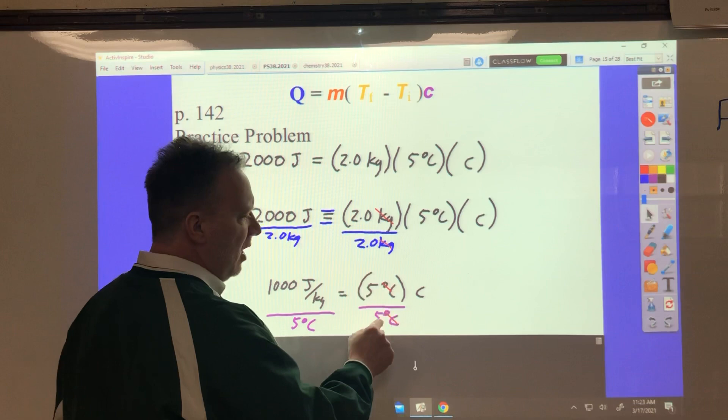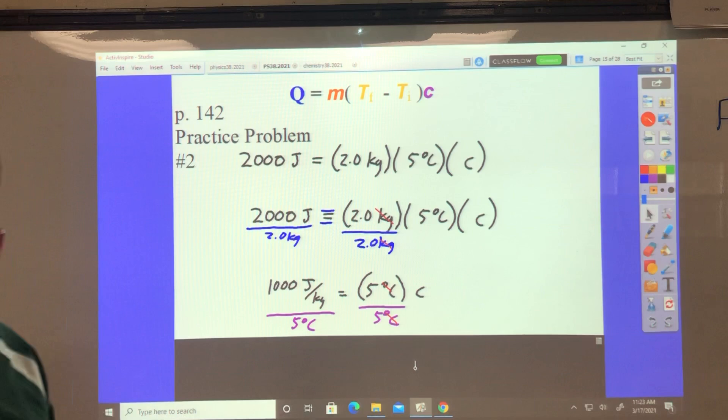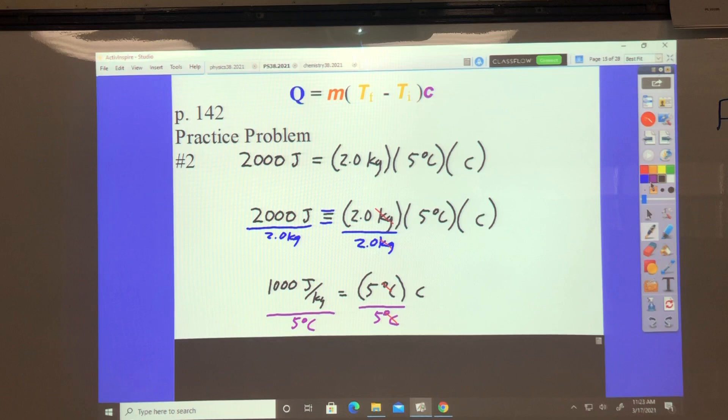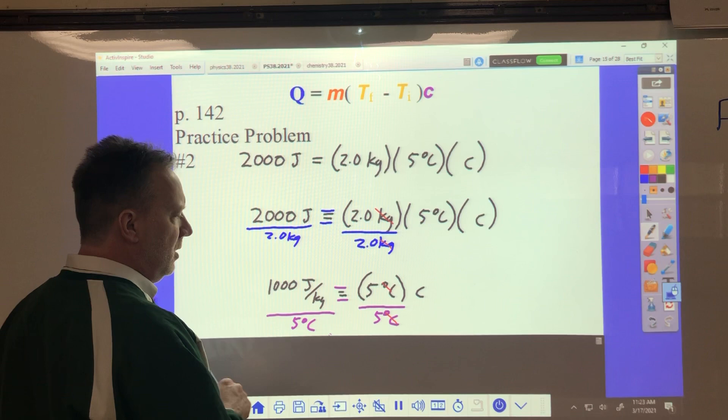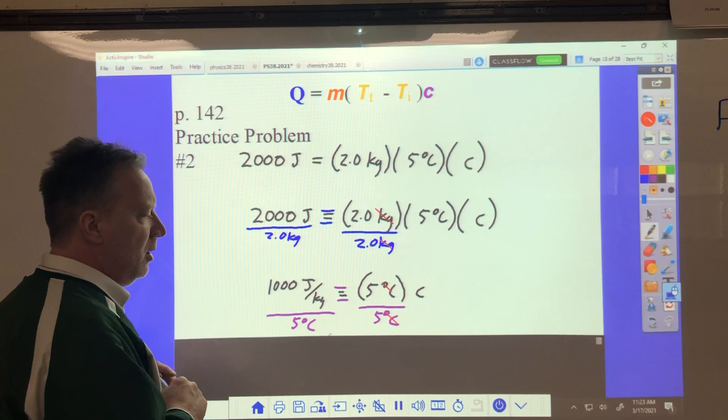Okay? And when I divide this side by 5 degrees Celsius, my 5 cancels, my degrees cancels. But to be equal, I don't have that in there. To be equal, I have to divide this side by 5 degrees Celsius. And then I'll have my C.